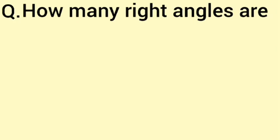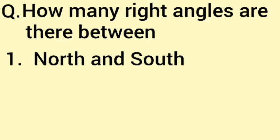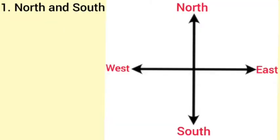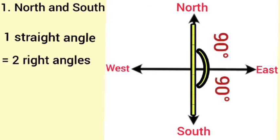How many right angles are there between north and south? So, first we will take directions north, east, south, west. As shown, the angle between north and south is one straight angle. One straight angle means two right angles.